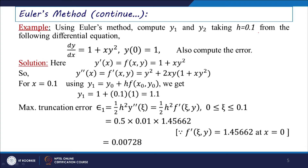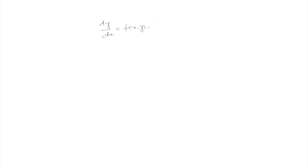For a practical example using Euler's method: compute Y1 and Y2 taking H = 0.1 from the differential equation DY/DX = 1 + XY², with Y(0) = 1. Also compute the error term. We write DY/DX = F(x, y) = 1 + XY², with Y0 = 1, so Y' = F = 1 + XY².